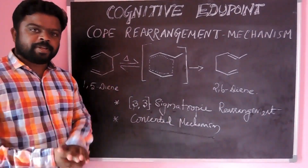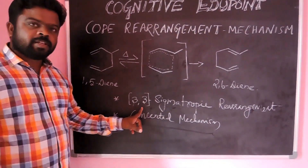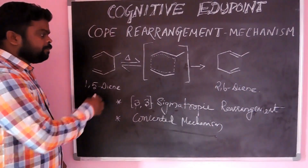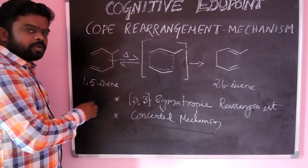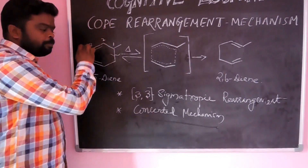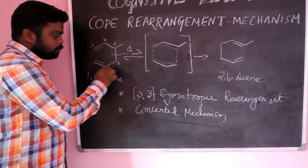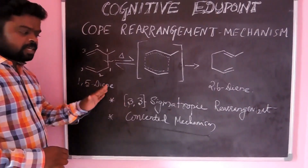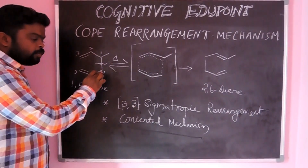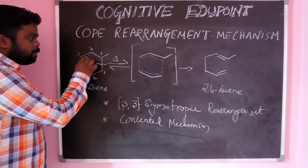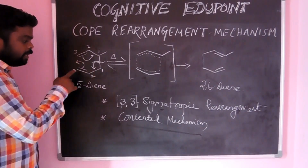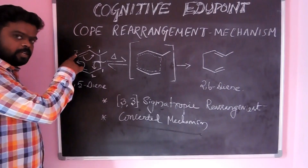Now we will discuss the mechanism of Cope rearrangement. As I already told, this is a 3,3 sigmatropic rearrangement because in the reactant molecule, the 1,5-diene, we can see where the bond breaking takes place. On the third side: 1, 2, 3 — this is one of the pi systems. And the other pi system also carries 1, 2, 3. This is a concerted mechanism. The bond breaking takes place at C1 of one pi system and C1 of the other pi system. The pi bond moves here, and this pi system moves to the third carbon of one pi system and the third carbon of the other pi system.